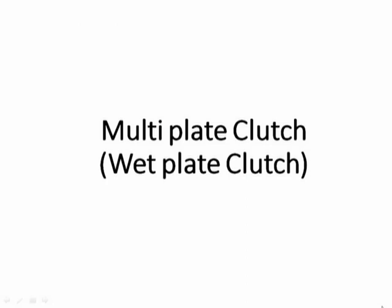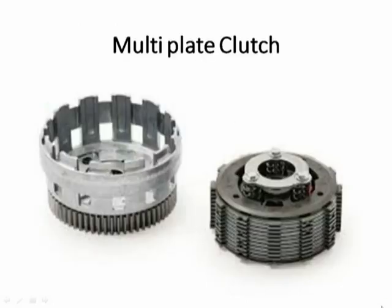Multi-plate clutch, also known as wet plate clutch, uses two or more plates for the transmission of power. Because there are multiple plates, there will be a large amount of friction and heat produced, which must be taken away from the contacting surfaces to prevent damage to the friction lining. That is why oil is used — the oil is continuously in contact with the mating surfaces, taking away the heat continuously. The power is transmitted because of the friction force between the plates.